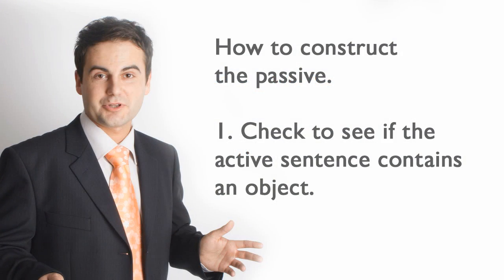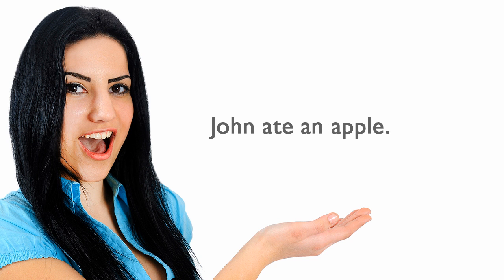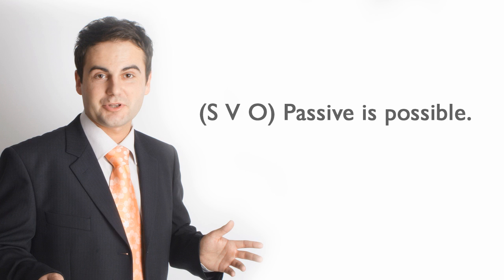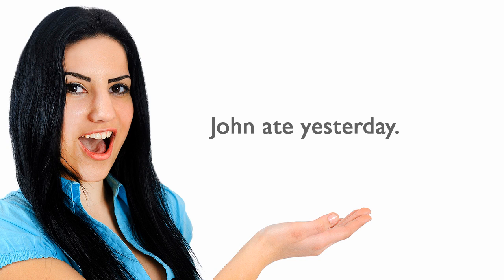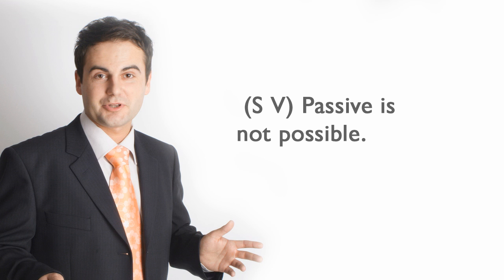Step 1: Check to see if the active sentence contains an object. For example, 'John ate an apple' has a subject, verb, and object — passive is possible. But 'John ate yesterday' has only a subject and verb — passive is not possible.